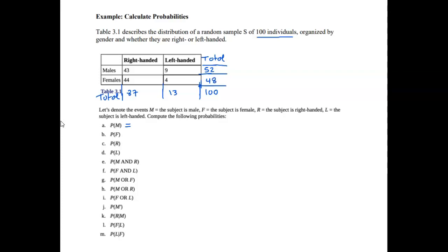If you add the row totals or column totals, they should each sum to 100 people. So the probability of randomly picking a male is 52 out of 100, or 0.52 as a decimal. The probability of picking a female is 48 over 100, which is 0.48. The probability of picking a right-handed person is 87 out of 100, or 0.87, and the probability of picking a left-handed person is 13 out of 100, or 0.13.